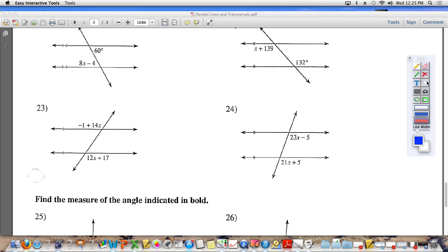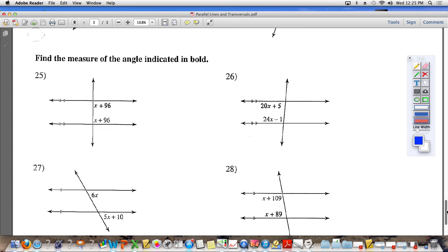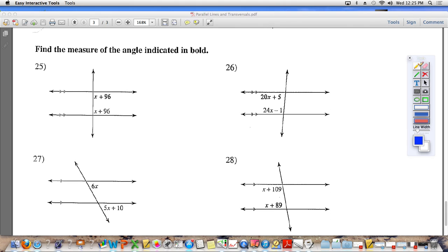Number 25. What do you know about the two angles that are labeled there? They are not equal to each other. They are interior same side, which means they add up to 180. So that means if I add together this angle and this angle, they are equal to 180. So you cannot say that they are equal to each other. You have to say that when you add them together, they equal 180. So you have to write it out like this: x plus 96 plus x plus 96 is equal to what? Equal to 180.